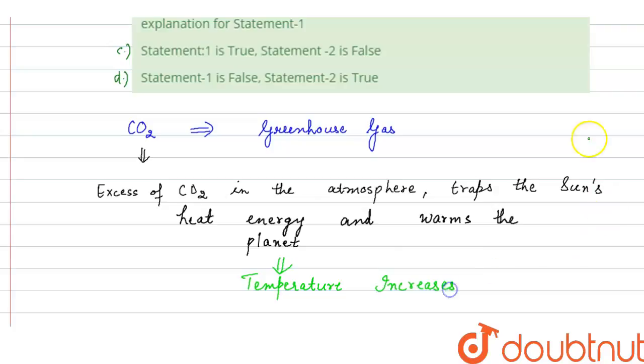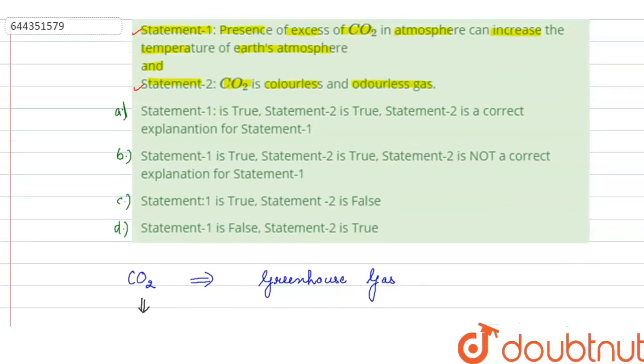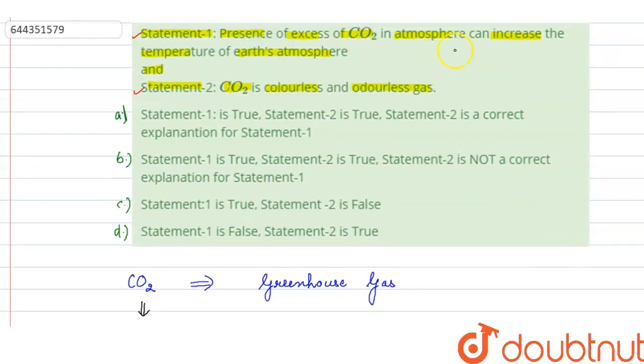So from here we can say that Statement 1 is true. Statement 1 is true because CO2 is a greenhouse gas and it causes greenhouse effect.